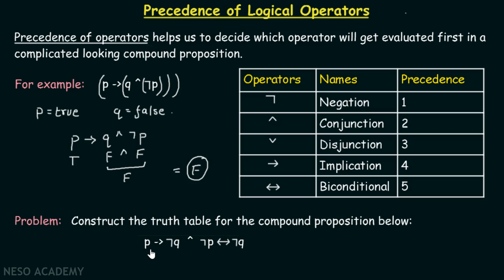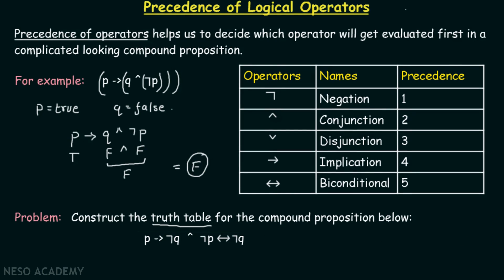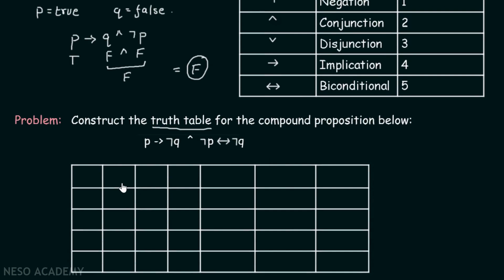This is a quite complicated-looking compound proposition, and without knowing the precedence of operators we cannot calculate its truth value. Let's construct the truth table. We'll write all different combinations of P and Q first: true-true, true-false, false-true, and false-false. We also need to calculate not P and not Q, so we include those columns as well.